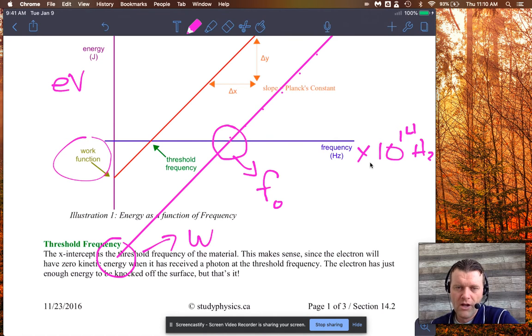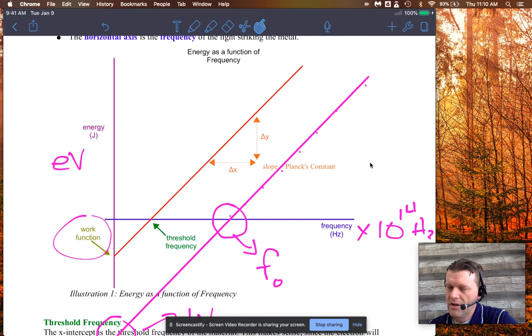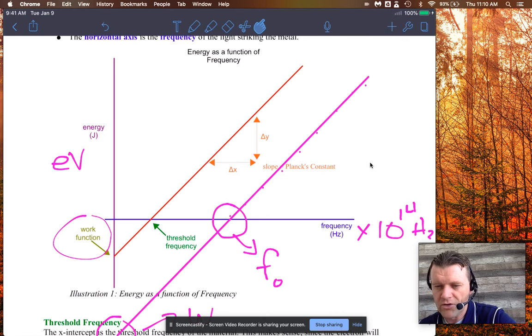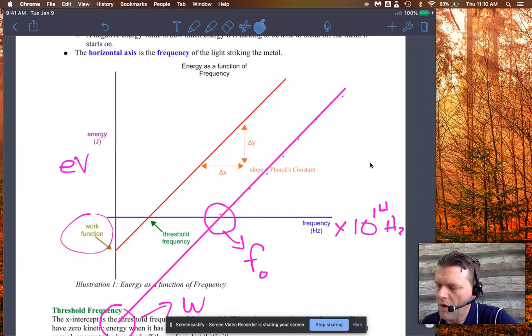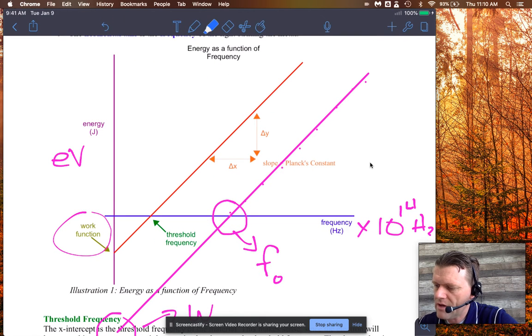So there's some really helpful information from this graph, the biggest one being though, the slope of this line, the slope of the line that we just drew is Planck's constant. It's the mathematical constant which is 6.63 times 10 to the negative 34 joule seconds or 4.14 times 10 to the negative 15 electron volt seconds. Worth noting are the units for this.